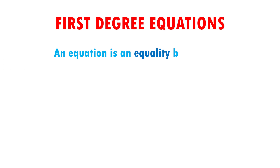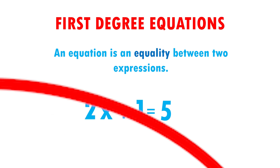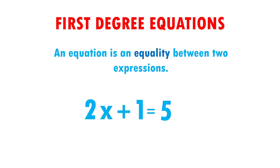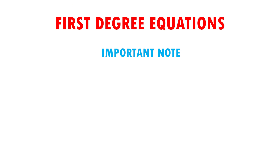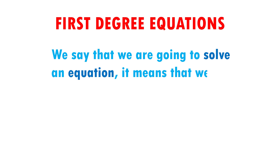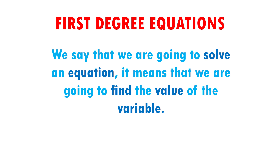An equation is an equality between two expressions. This means that this here equals the same as this here, which is why it has an equal sign in the middle. They also have a variable, which is a letter whose value we do not know. In addition, its variables would always be raised to the first power. This means that quadratic or cubic terms would not appear. Something very important to clarify is that when we say we're going to solve an equation, it means we're going to find the value of the variable. We are going to see equations of the first degree, starting with simple ones and then more complicated ones.